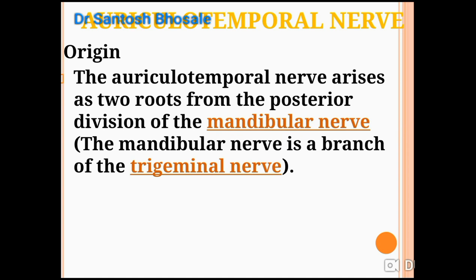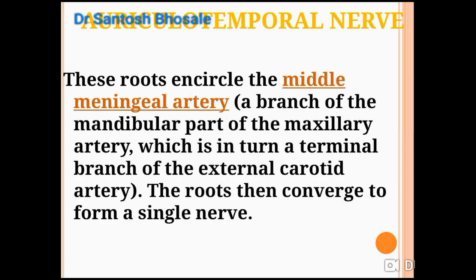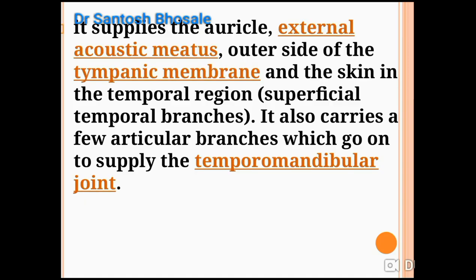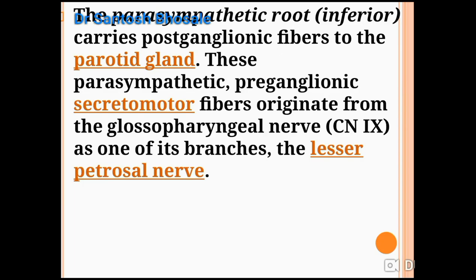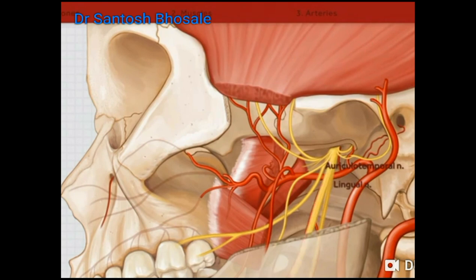Another content of the temporal fossa is the auriculotemporal nerve — as the name suggests, it supplies the ear and the temporal fossa. It is a sensory branch from the posterior division of the mandibular nerve, giving general sensation to the ear and the temporal fossa. It is formed by two roots which surround the middle meningeal artery. It supplies the temporomandibular joint and part of the temporal fossa, and also carries postganglionic parasympathetic secretomotor fibers to the parotid gland from the otic ganglion.